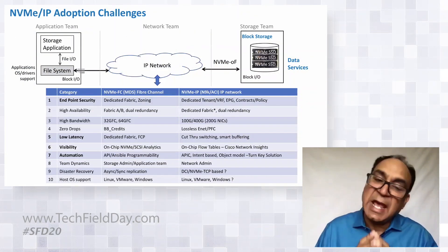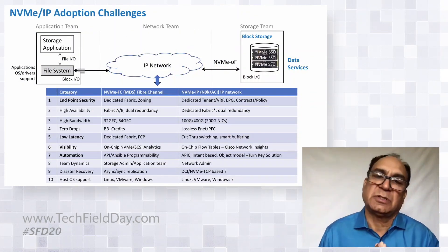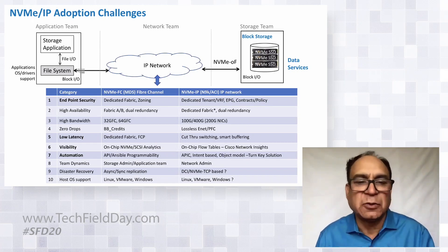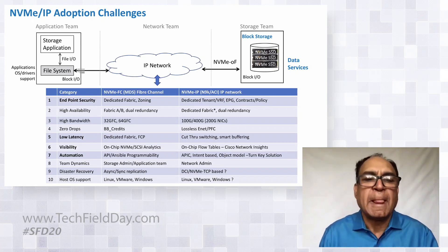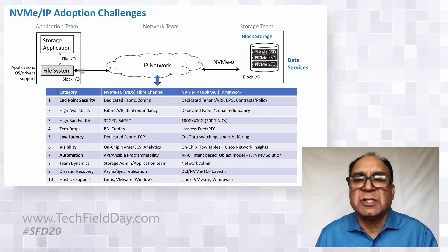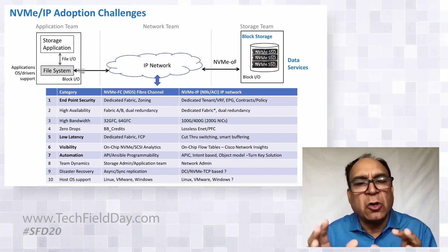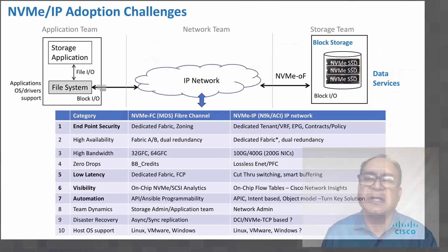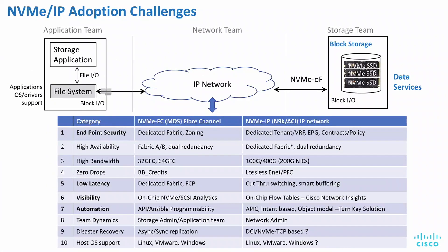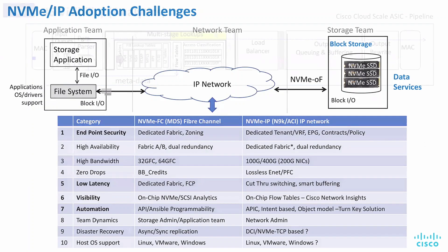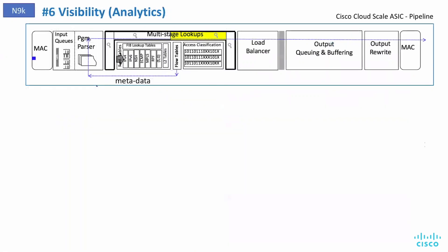I've outlined here 10 problems, or 10 adoption challenges. Not enough time to go through each one, but some of these challenges are already solved with the ACI Ethernet fabric for the storage world — things like endpoint security, low latency, visibility, and automation. Let me go through a few of them quickly.